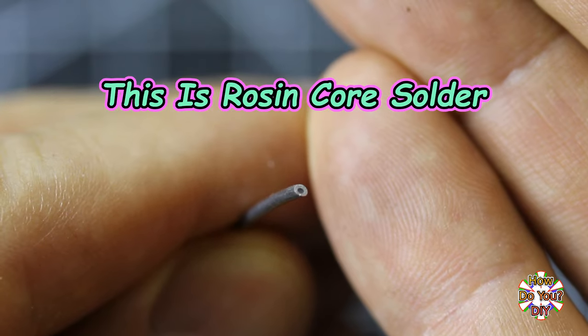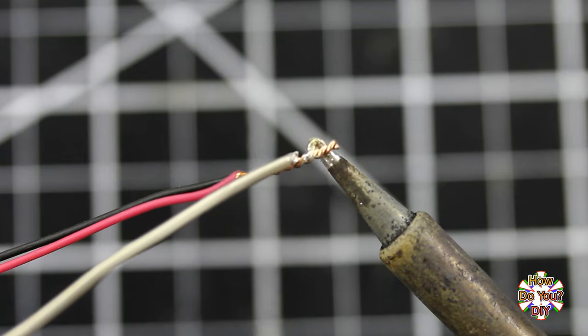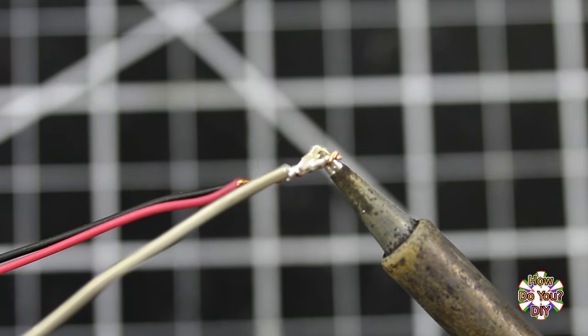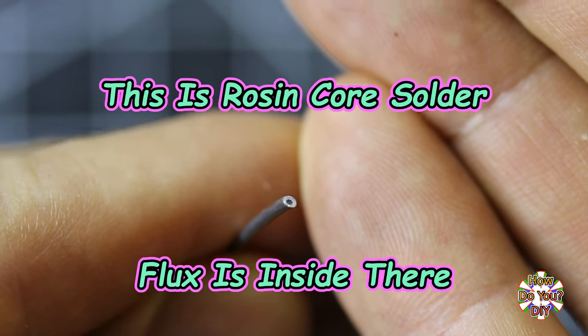Whenever possible, it's best to use rosin core solder because solder will not bond without flux, and rosin core solder has flux within it.